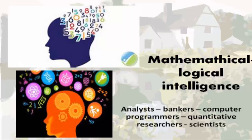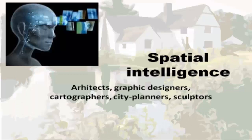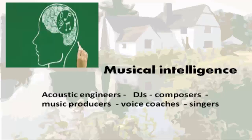The third kind of intelligence is spatial intelligence. People with this intelligence have the ability to create mental images and mental representations of objects and other things — to visualize. People with spatial intelligence include architects, graphic designers, cartographers, city planners, and sculptors.